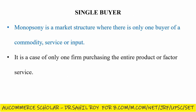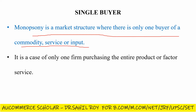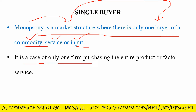The first feature is single buyer. Monopsony is a market structure where there is only one buyer of a commodity, service, or input. It is a case of only one firm purchasing the entire product or factor service. So this is a market structure or situation where a single firm buys the entire product range or all of the services available.